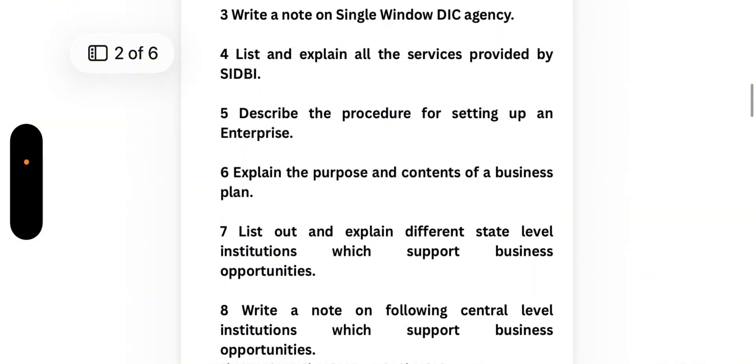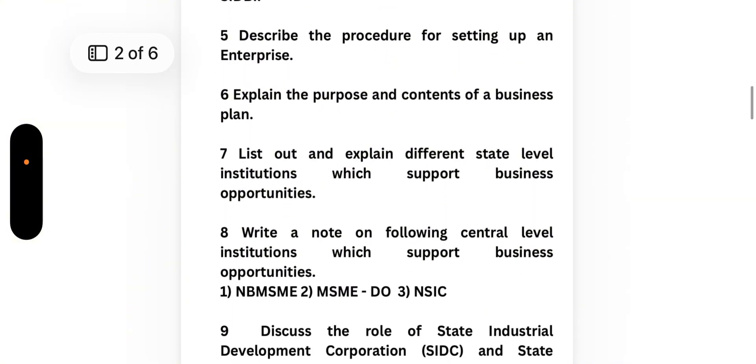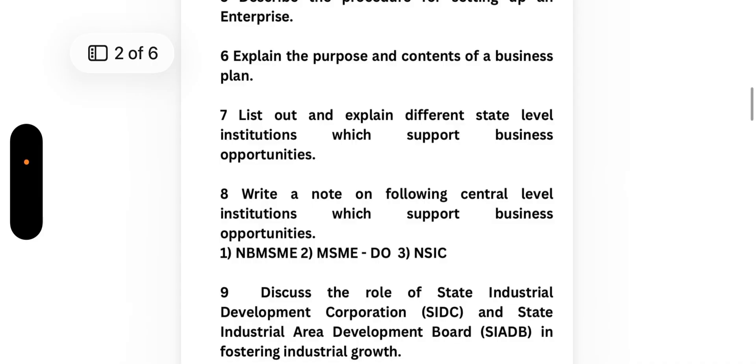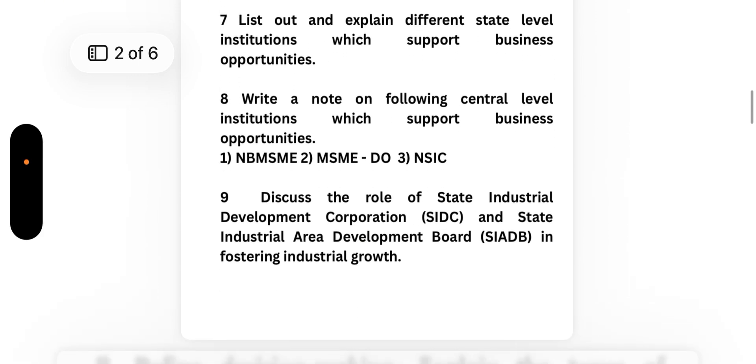Number 7: List out and explain different state level institutions which support business opportunities. Number 8: Write a note on following central level institutions which support business opportunities - NBMSME, MSME DO, and NSIC. Number 9: Discuss the role of State Industrial Development Corporation SIDC and State Industrial Area Development Board SSIADB in fostering industrial growth.